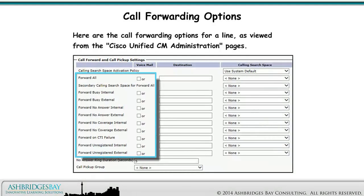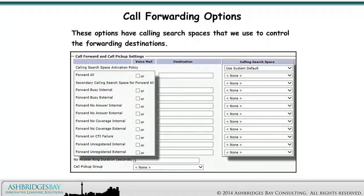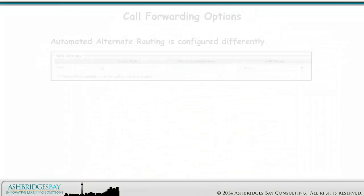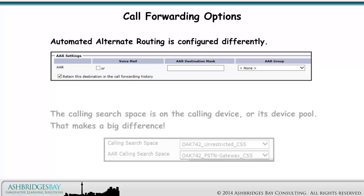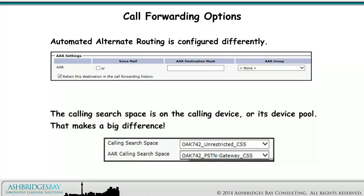Here are the call forwarding options for a line as viewed from the Cisco Unified CM Administration pages. These options have calling search spaces that we use to control the forwarding destinations. Automated alternate routing is configured differently — the calling search space is on the calling device or its device pool. That makes a big difference.